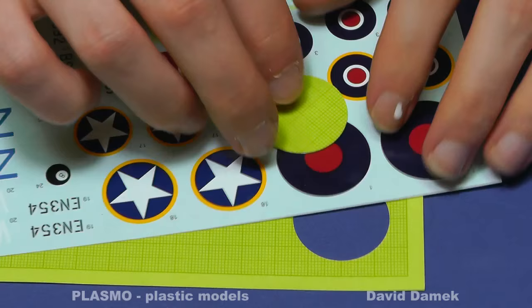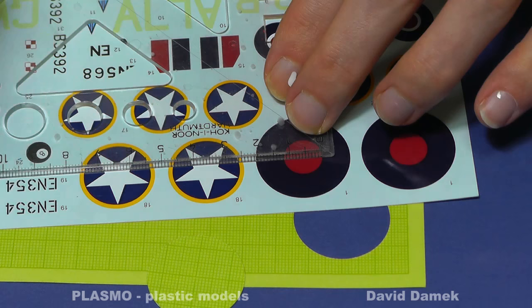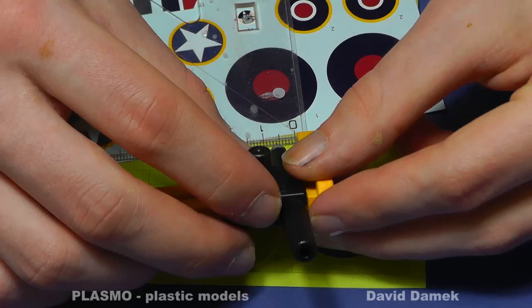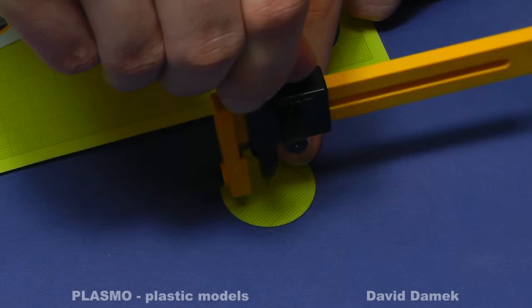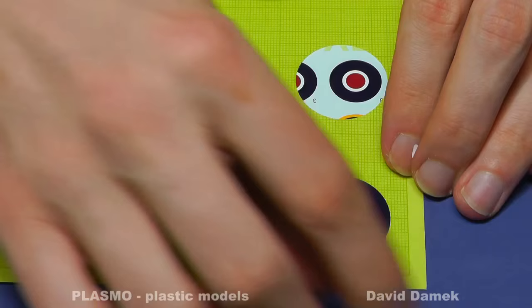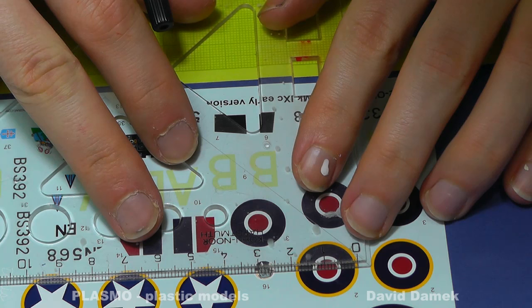Very important is to correctly measure the diameter, otherwise the stencil will not have the same size as the decals. Now I measure the inner circle and cut it out again. I continue in the same manner with all other roundels.